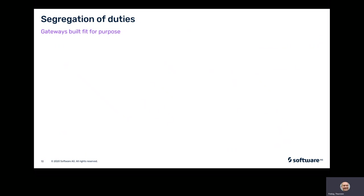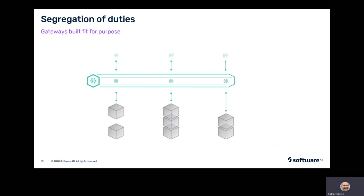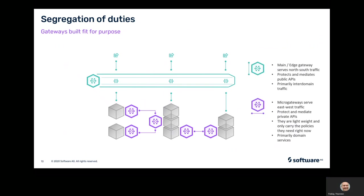This calls out for a runtime component that is designed and built specifically for that purpose. This component is different from an API gateway sitting on the edge of the domains, since the edge gateways can't cope with the traffic between the microservices itself. Here a more lightweight component is required which can be deployed along with the microservices but still covers the capabilities of an API gateway. Such a micro gateway still needs to collaborate closely with other API management components to achieve the overall governance.